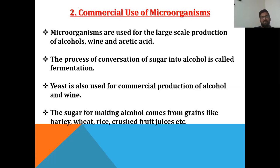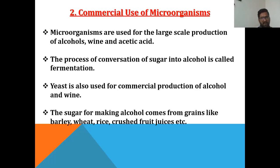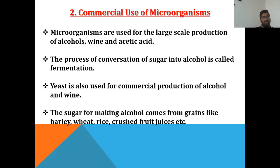Microorganisms are used for the large-scale production of alcohols, wine, and acetic acid — meaning vinegar. The process of conversion of sugar into alcohol is called fermentation. Yeast is also used for the commercial production of alcohol and wine. The sugar for making alcohol comes from grains like barley, wheat, rice, and crushed fruit juice.